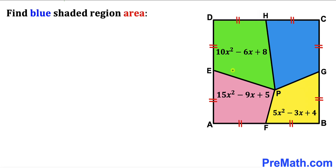Welcome to pre-math. In this video we have got four quadrilaterals fully confined in a square ABCD, such that the area of the yellow quadrilateral is represented by the quadratic expression 5x² minus 3x plus 4.